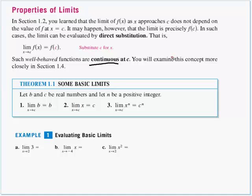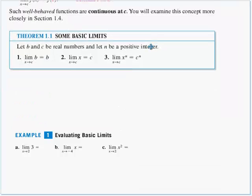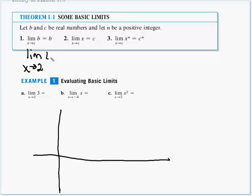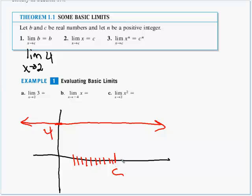Here is Theorem 1-1: some basic limits. If we have the limit as x approaches c of some constant b, then the limit is b. If I had the limit as x approaches 2 of 4, the function y equals 4 is just a horizontal line crossing the y-axis at 4. No matter what x value we put in, every x value has a value of 4. So the limit as x approaches c of some constant equals just that constant.